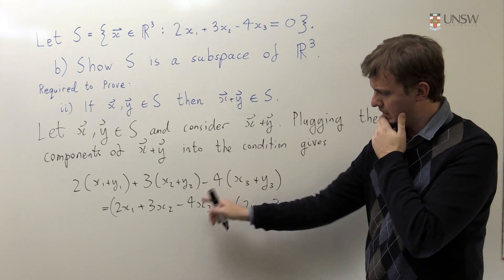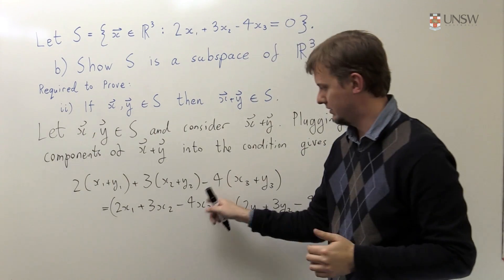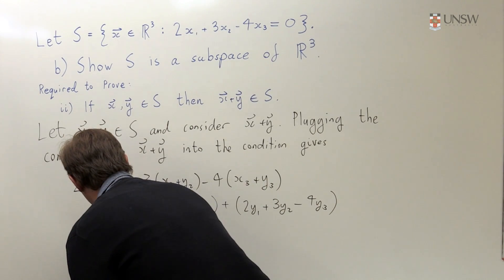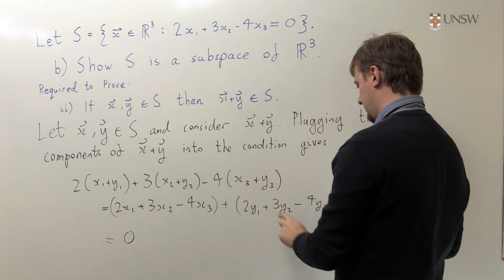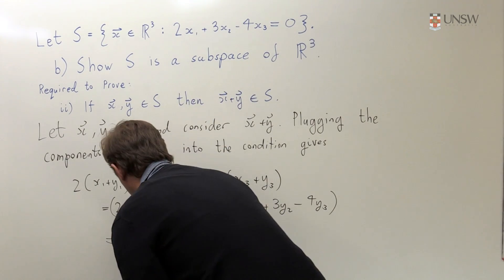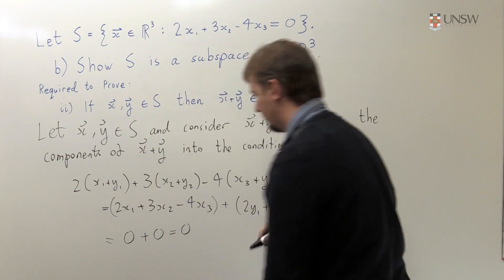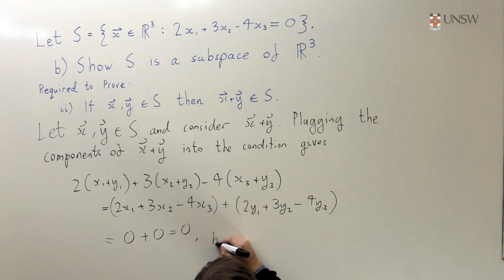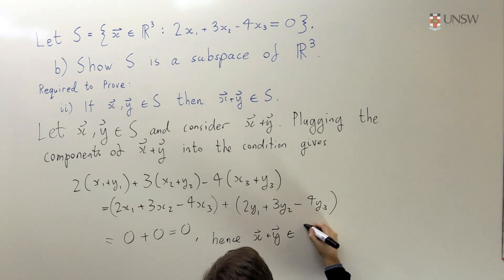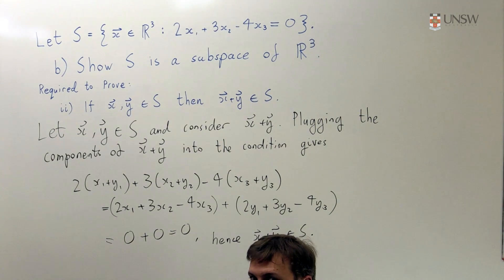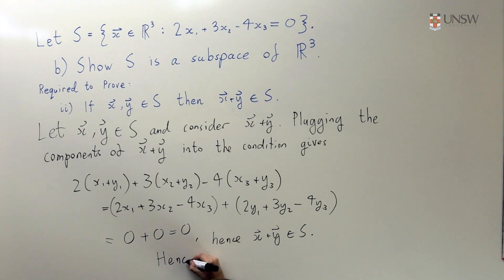I know that because X is in S, that this quantity must be zero. And I also know because Y is in S, that this other quantity must also be zero. So written this way, this is zero plus zero, and of course zero plus zero is zero. So that means X plus Y is in S. And actually there's a special name for this property - this is called closure under addition.